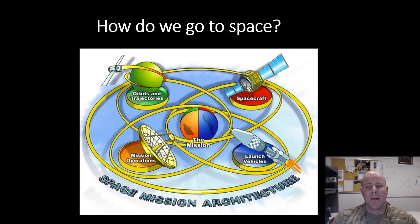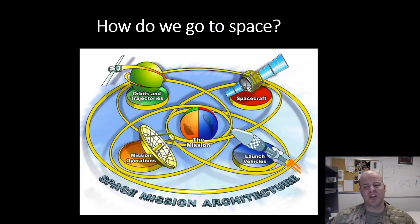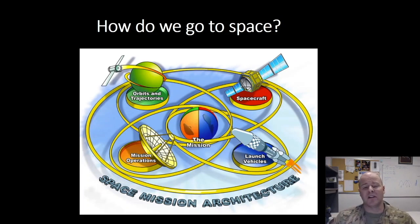So jumping right in, how do we go to space? In previous lessons, we've talked about why we might want to go to space, but how do we actually get there? Well, the space mission architecture identifies five key elements that are going to be a part of any space mission.